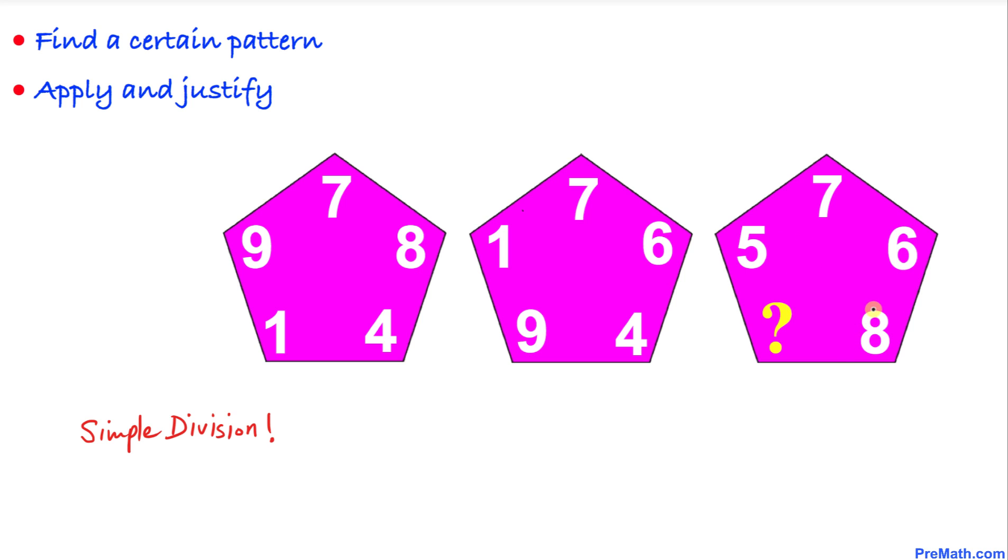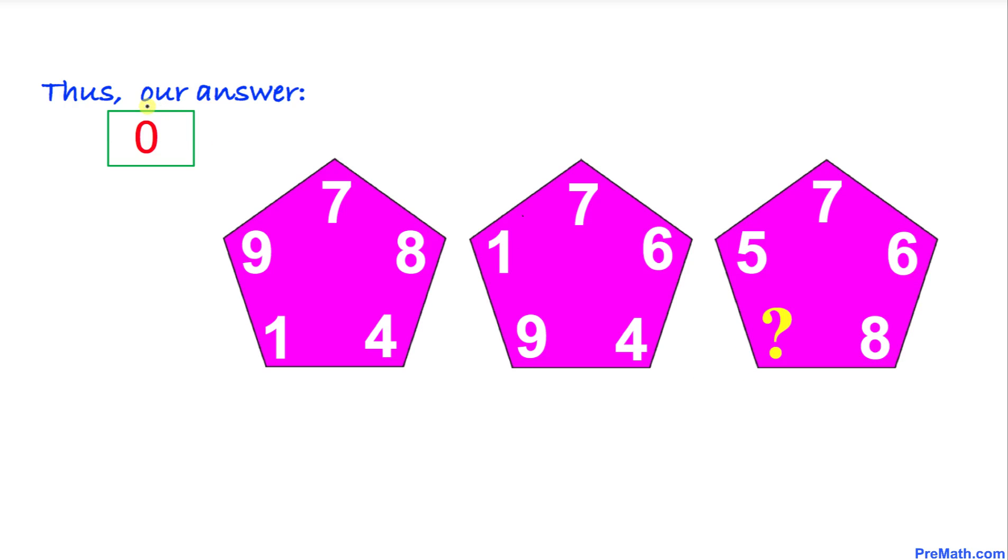Finally, on this right-hand side pentagon, we can see that if we divide 8 into 56, our answer is going to be 7. Here, 8 means if there are two digits, the answer is going to be 08, so that means this number is going to be 0. Thus, our answer turns out to be 0.